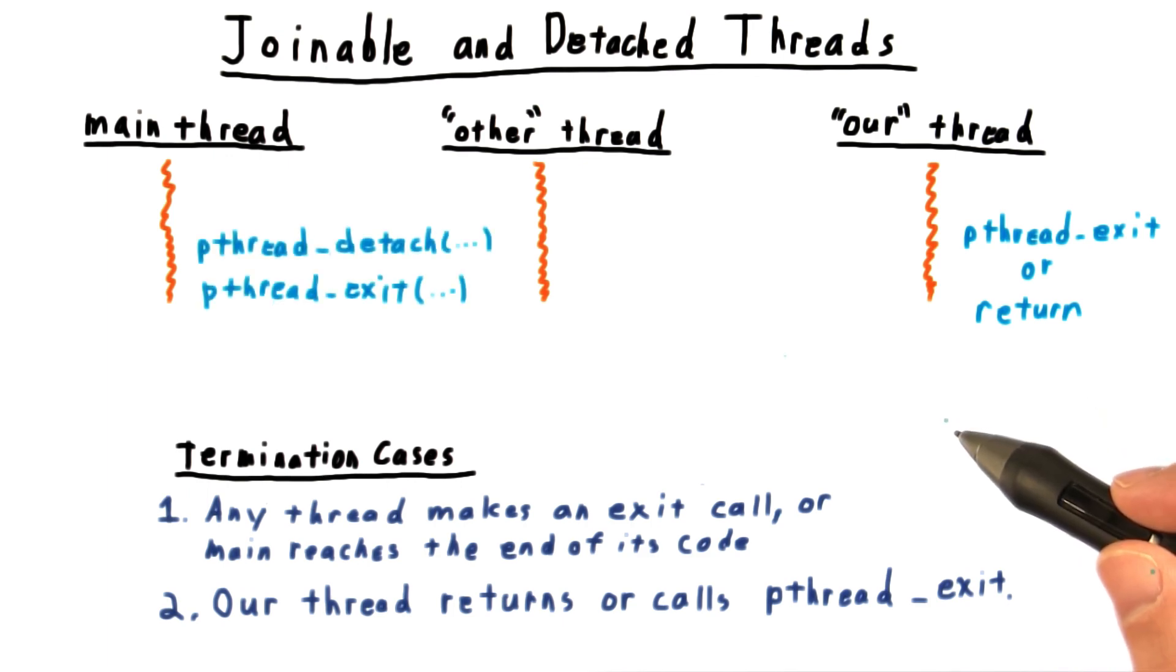A thread can either be created in a detached state or detached later with a procedure call. When the detached thread reaches the end of its execution, its memory is cleaned up right away and any return value just disappears. At least no other thread has a way of getting at it.